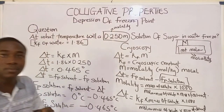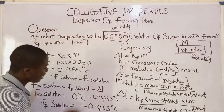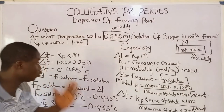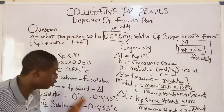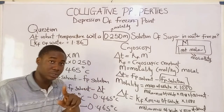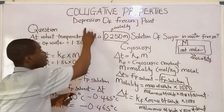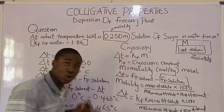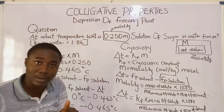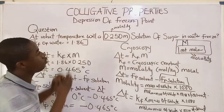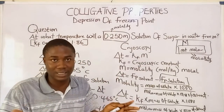When you are solving, you must be very careful because both 0.465 and negative 0.465 can appear in the answer options. The right answer is negative 0.465 degrees Celsius. You can see how questions on depression of freezing point are solved. Remember, it is also called cryoscopy.